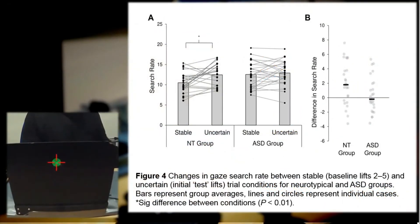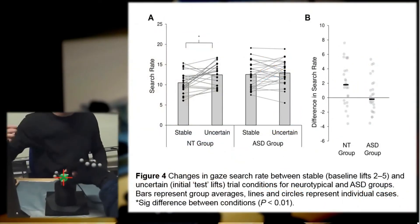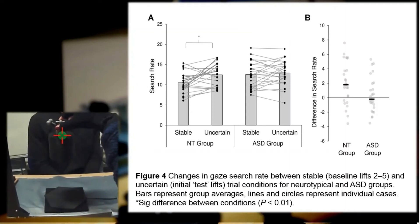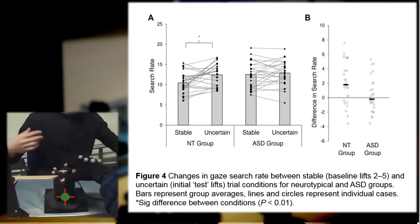Nevertheless, there were some subtle differences in visual sampling behaviors shown in Experiment 2 that appeared to be context-sensitive. Specifically, as you can see in this figure here, neurotypical participants tended to increase gaze search rate as tasks became more uncertain. Such differences did not appear to be shown in autistic participants. However, further research is required to examine these effects in a bit more detail.